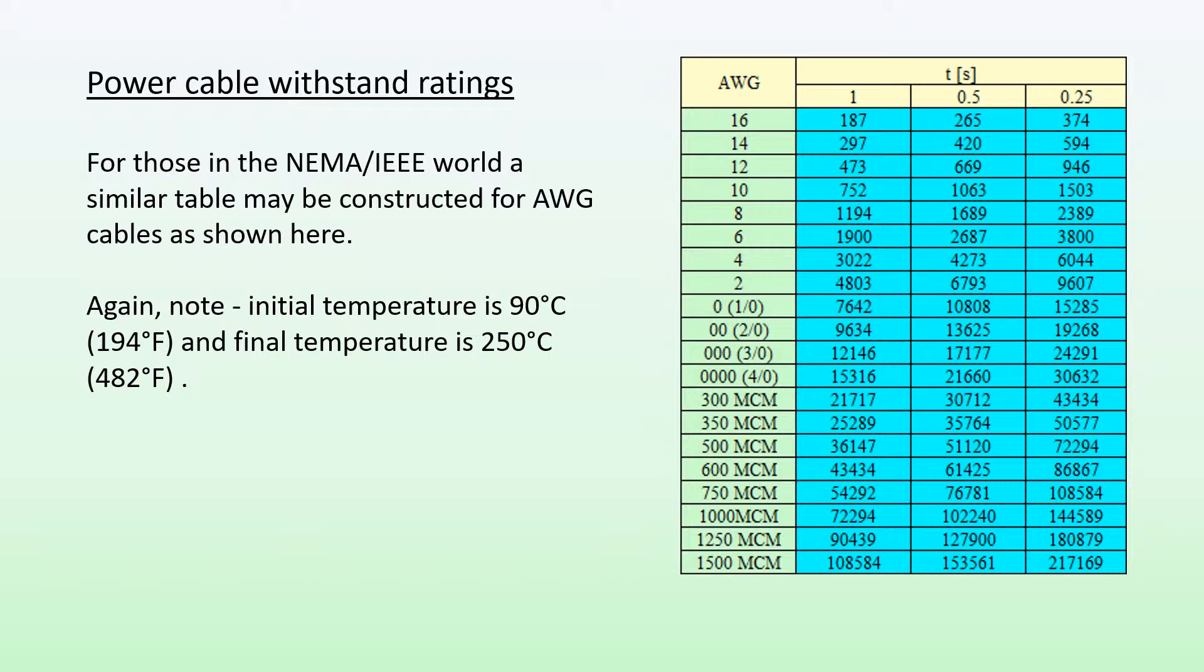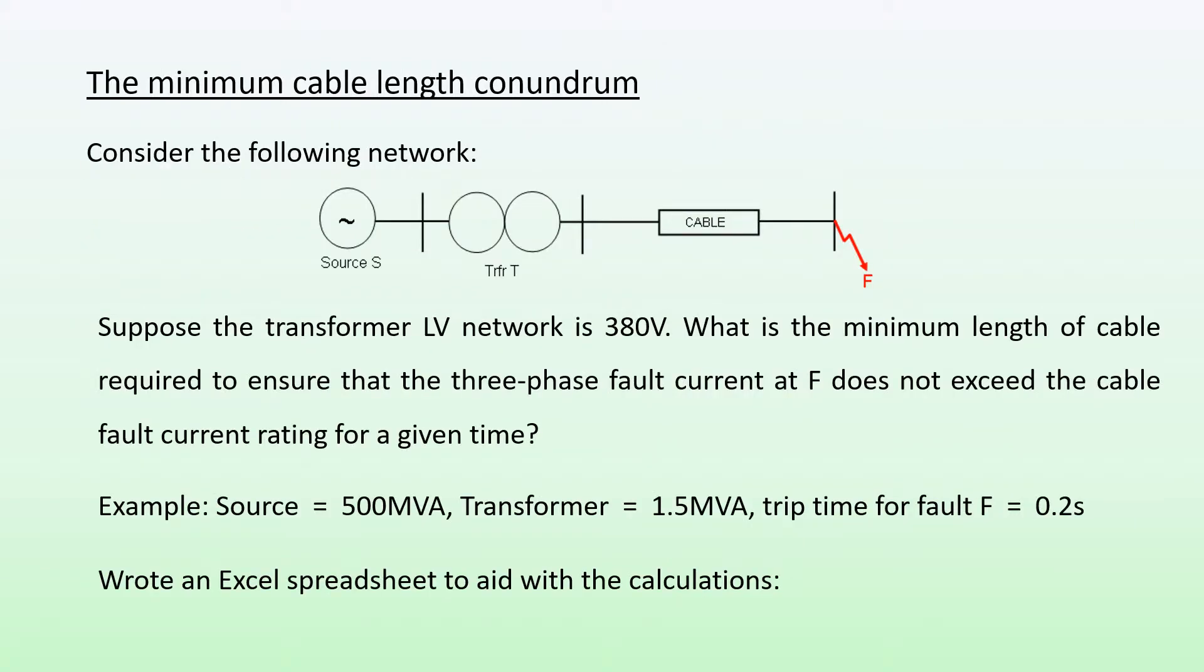So the minimum cable length conundrum. Let's consider the following network: I have a source, transformer, and a cable with a fault F at the end of my cable. Suppose the transformer network is 380 volts. The question is: what is the minimum length of cable required to ensure that the three-phase fault current at F does not exceed the cable fault current rating for a given time?